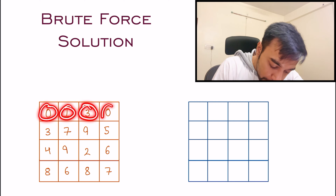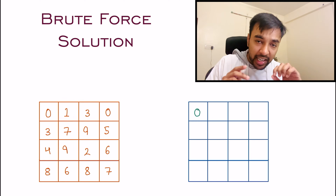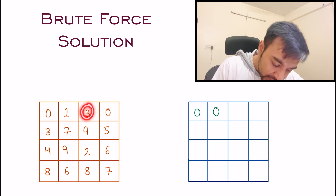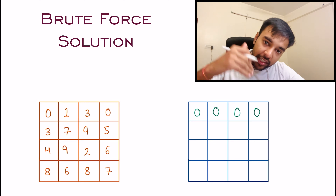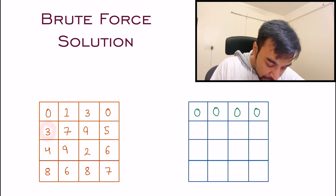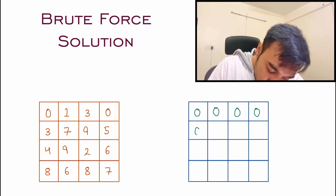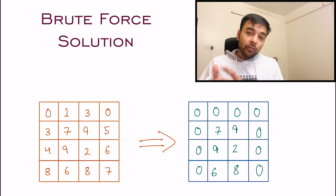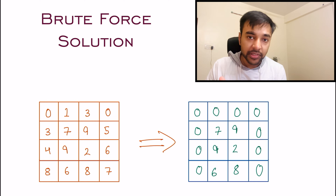If an element is zero, copy it to the new matrix. When you move to the next element, check if you find a zero in the same row — if yes, write that element as zero. Similarly for each subsequent element: check the row and column. If a zero is found in the column, write zero. Once the new matrix is filled, copy all elements back to the original matrix. This is the correct answer.